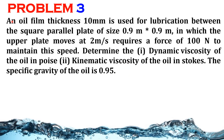Problem number 3. An oil film of thickness 10 mm is used for lubrication between square parallel plates of size 0.9 m × 0.9 m, in which the upper plate moves at a velocity of 2 m/s and requires a force of 100 N to maintain the speed. Determine the dynamic viscosity of oil in poise and the kinematic viscosity of oil in stokes. The specific gravity of oil is 0.95.